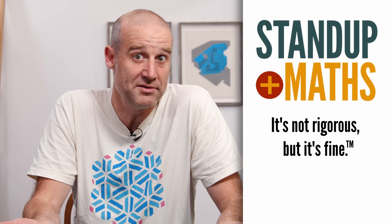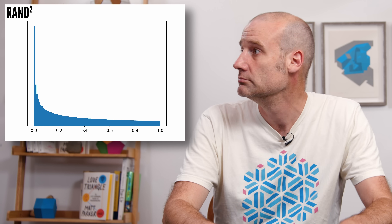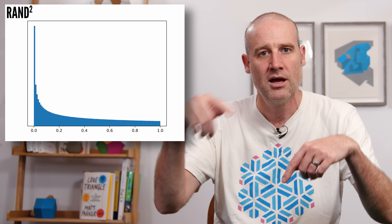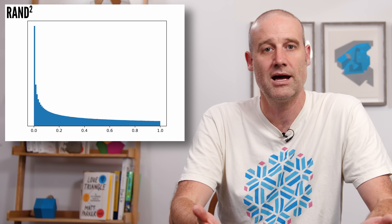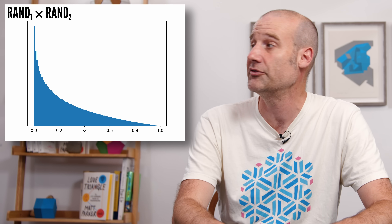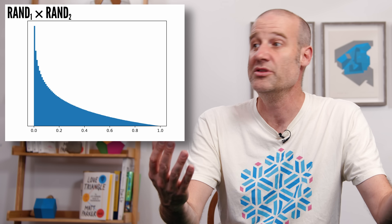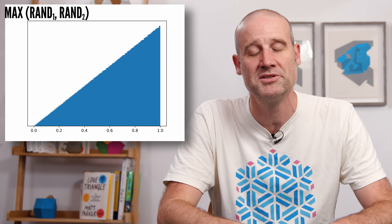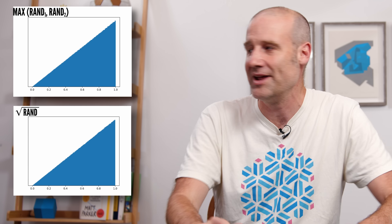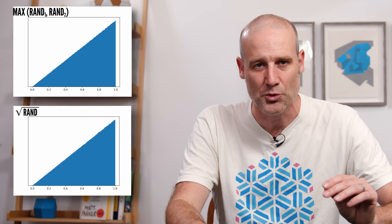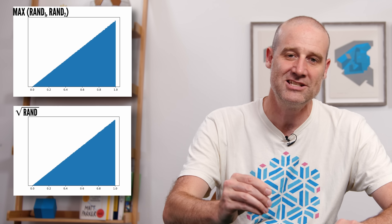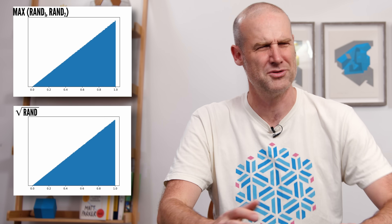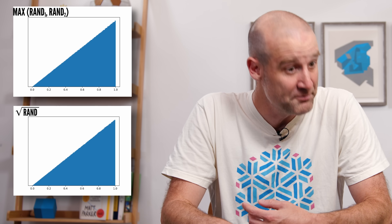We can now take all those random numbers between 0 and 1. Dylan asked ChatGPT to show, for example, the square — if you squared them all. That's the distribution where the height shows you the probability of getting that value. What if we did two random numbers multiplied together? Subtly different. You can take the minimum of two random numbers, and here it comes, the maximum of two random numbers, and then the square root of one random number. Dylan realized those last two plots were identical. I plotted them myself — and yes.